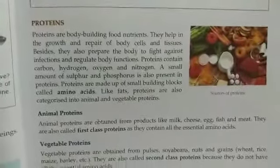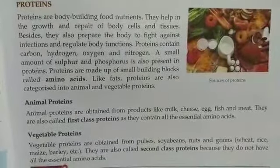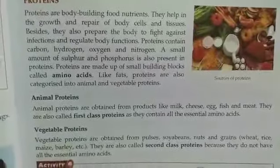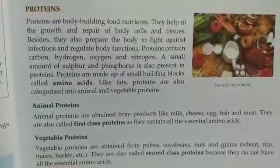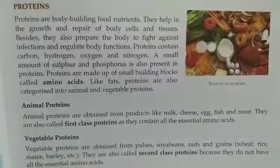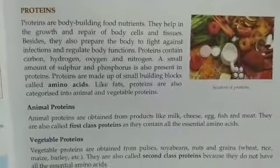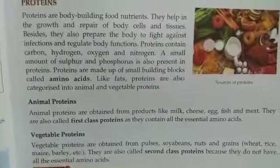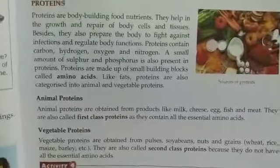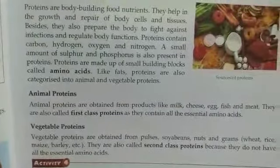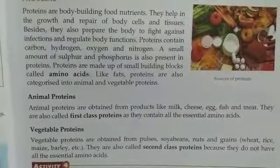Now comes protein. Protein is our body-building nutrient. Protein helps our body's growth and repair. Protein is made up of six components — mainly carbon, hydrogen, oxygen, and nitrogen, plus a small amount of sulfur and phosphorus. These are the main constituents of protein.